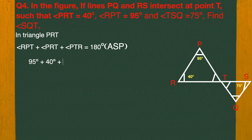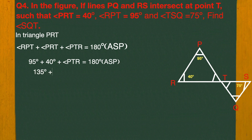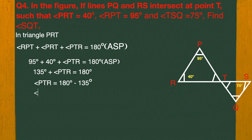So we write: 95 degrees plus 40 degrees plus angle PTR equals 180 degrees. That gives us 135 degrees plus angle PTR equals 180 degrees. Therefore PTR equals 180 minus 135, which is 45 degrees.